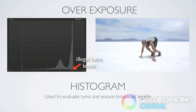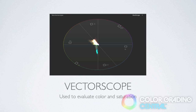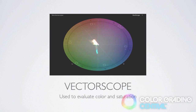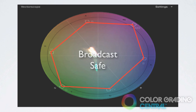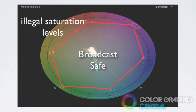Our last scope, the vectorscope, can seem intimidating at first glance but it's really useful in evaluating color and saturation based on the color wheel. Colors that are farther from the center are more saturated or intense, while colors closer to the center are more dull. The first key feature is the flesh line, which is useful in color correcting skin tones, as this is where skin tones should lie on the vectorscope. The vectorscope is also useful in ensuring broadcast legality of chroma or color levels — trace that stays within the marked lines is broadcast safe, and any trace that goes outside is too saturated and not safe for broadcast.